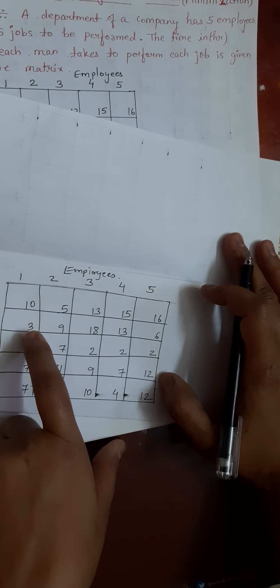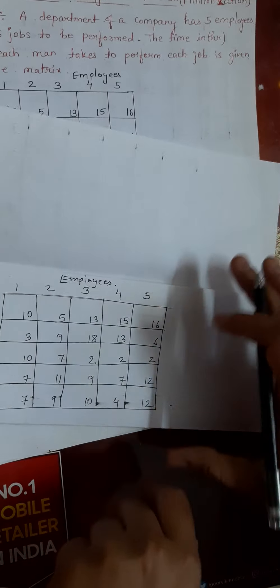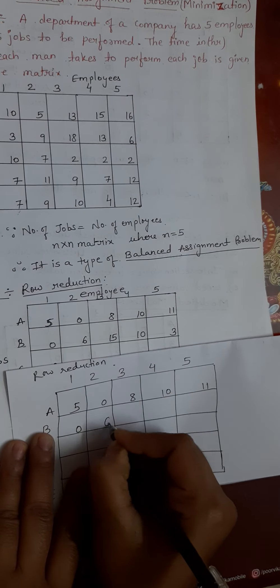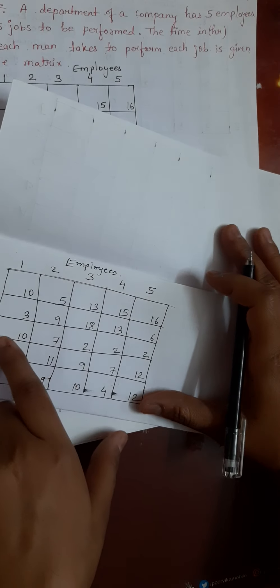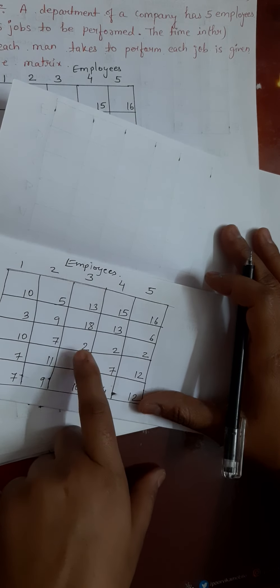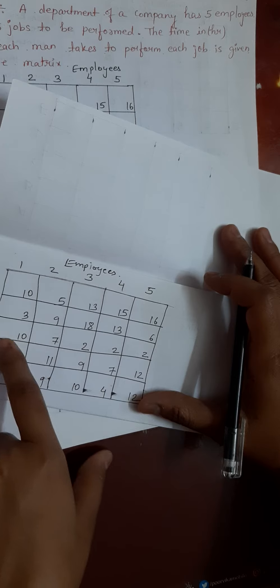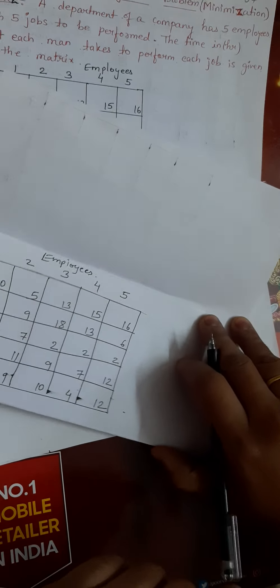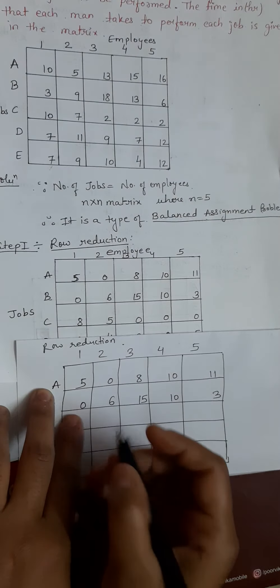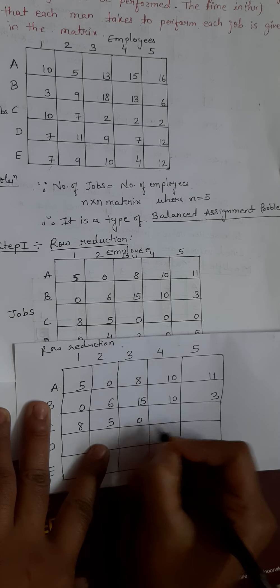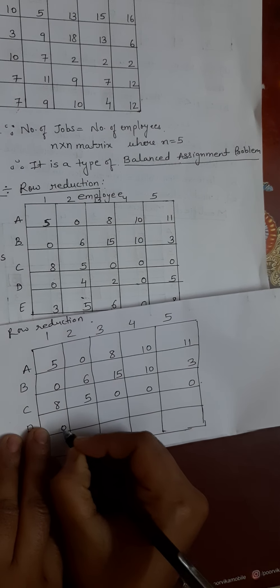In the second row, the minimum element is 3. We subtract 3 from all elements in that row and we get 0, 6, 15, 10, and 3. In the third row, the minimum element is 2. We subtract 2 and we get 8, 5, 0, 0, 0. Similarly, we perform row reduction for the fourth and fifth rows.